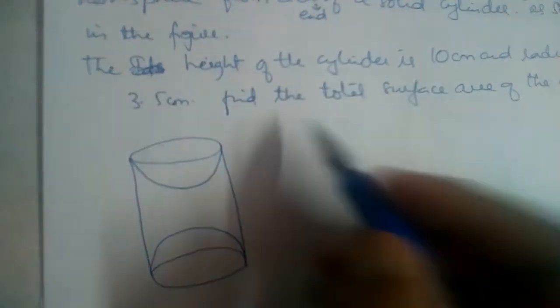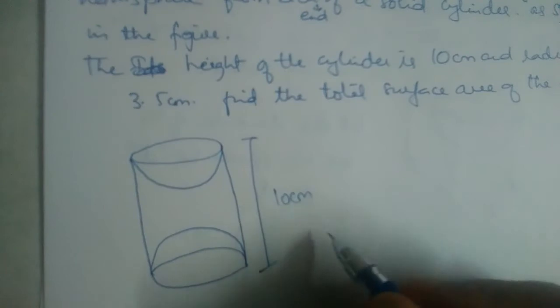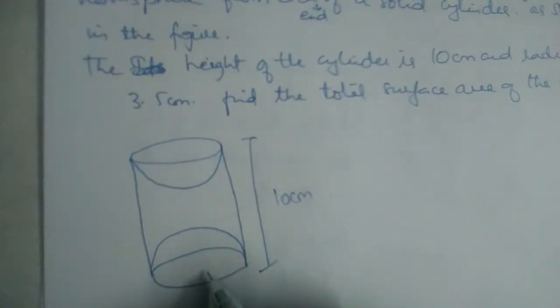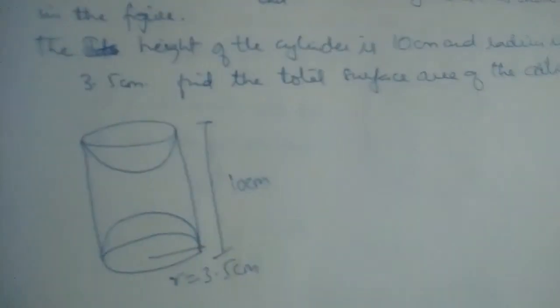The height of the cylinder is 10 cm and the radius is 3.5 cm. Find the total surface area of the article.